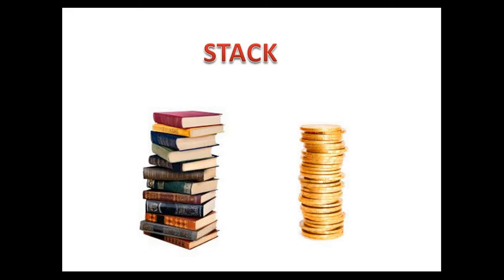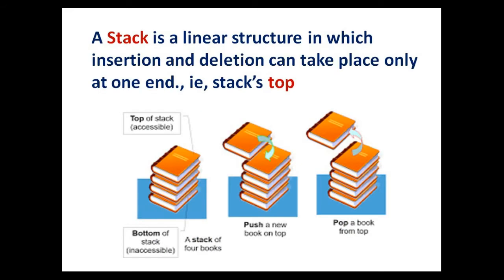Stack is an ordered collection of items. These are two real-world examples of stack — a pile of books and a stack of coins. Bottom of the stack is inaccessible and top of the stack is accessible. That means we can place a book on its top and also we can take away from the top. So a stack is a linear structure in which insertion and deletion can take place only at one end.